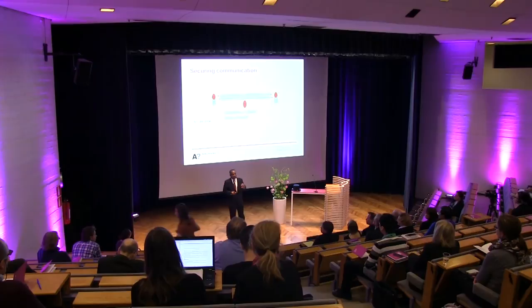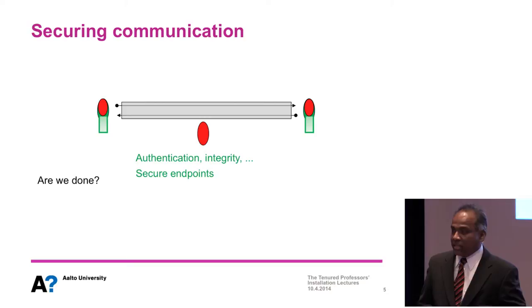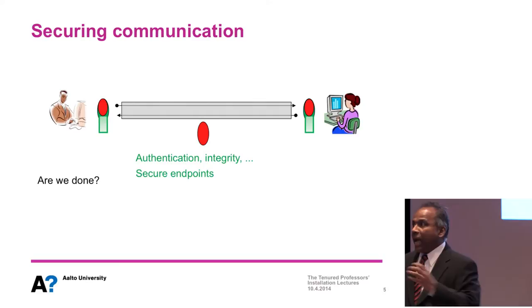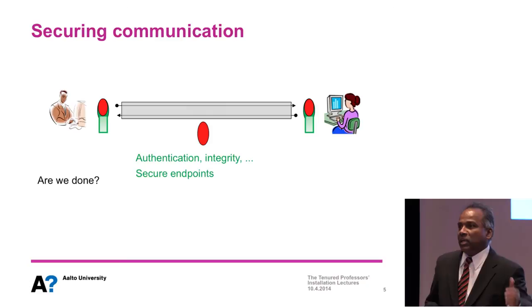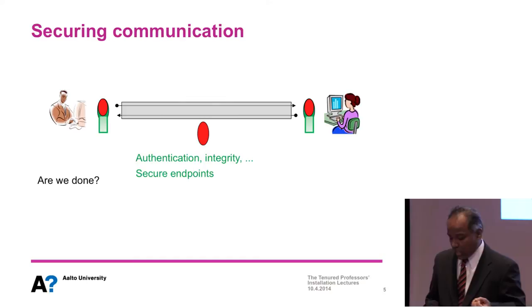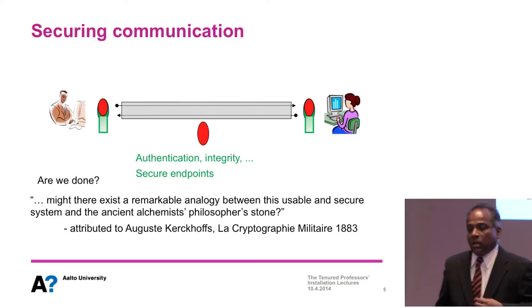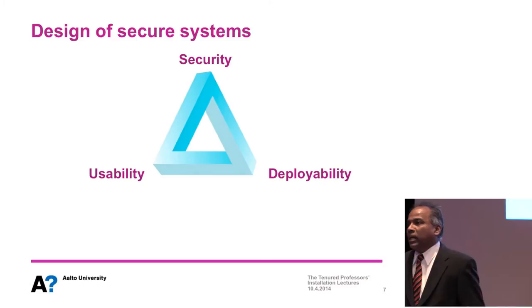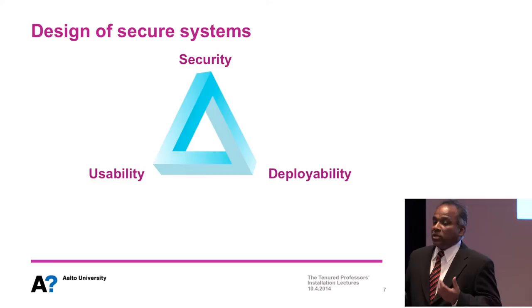One can again ask: if we know how to secure communication using cryptography and how to secure endpoints using platform or hardware security techniques, are we done? Typically not — because there are people at the ends of these communication channels, and people have cognitive limitations. Any security mechanism that stretches people beyond these cognitive limitations risks being perceived as unusable. Already a hundred years ago, French cryptographer Auguste Kerckhoffs speculated that security and usability might be contradictory goals, and this has been the common sentiment even among security researchers.